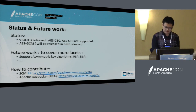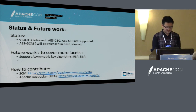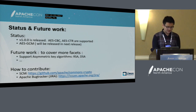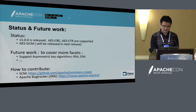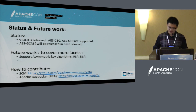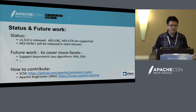Here is the status of our project and the future work. The first release has been released. Currently CBC and CTR mode are supported. GCM mode will be released in the next release. We are also planning to add more algorithms, such as support for asymmetric key algorithms like RSA. If you are interested in contributing to Commons Crypto, you can create a JIRA or a pull request on GitHub. You can also send an email to the mailing list of Apache Commons.